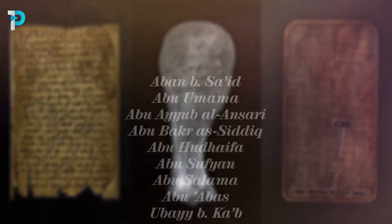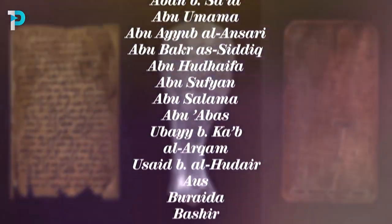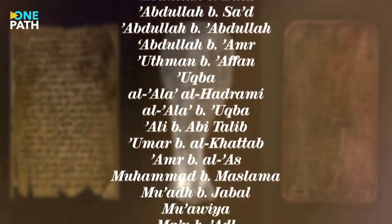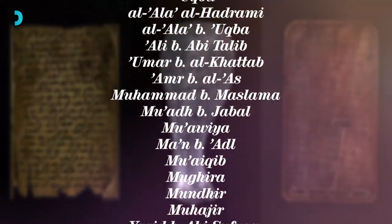Over time at least 65 companions functioned as scribes for the Prophet who eventually established a school in Medina dedicated to teaching 900 of his companions to read and write.